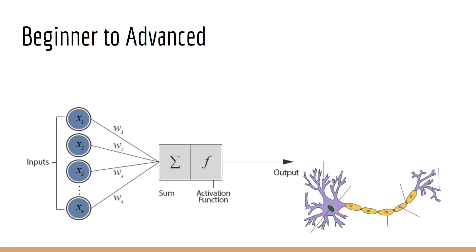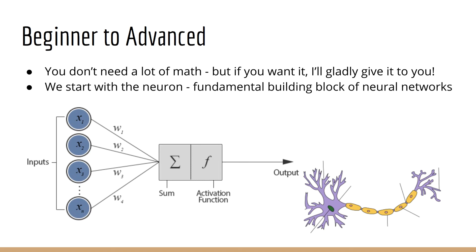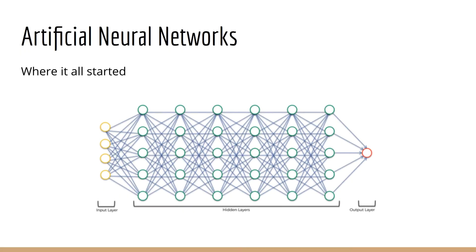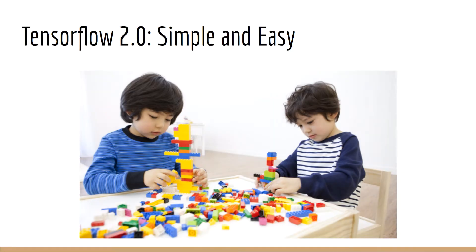This course is designed to be a beginner-to-advanced course, so you don't need a lot of math and background knowledge. We're going to start by looking at basic machine learning in the form of a neuron, the fundamental building block of neural networks, then jump right into neural networks. With TensorFlow 2.0, you don't need a lot of heavy theory — the API was designed to be easy to use so you can focus on building cool things rather than debugging mathematical equations.